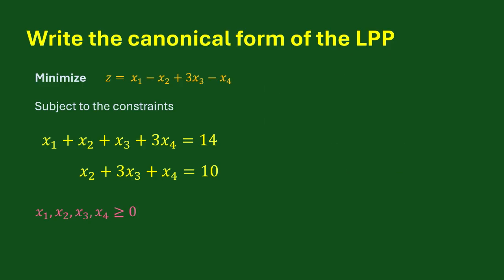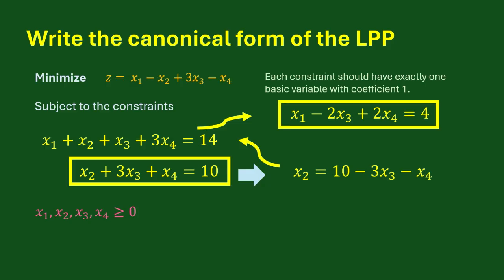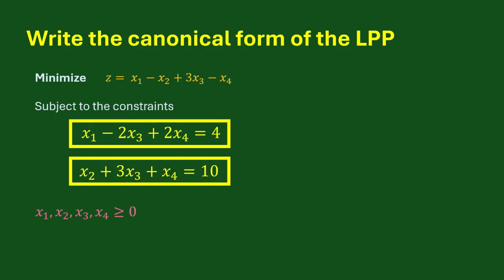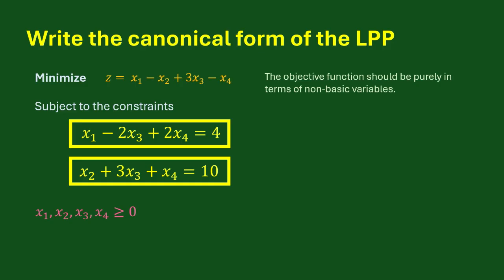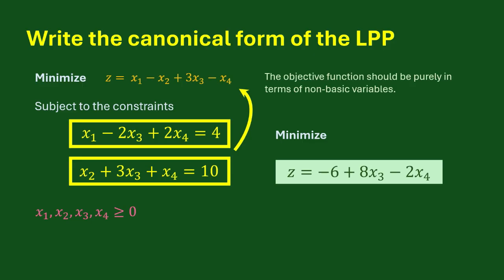Another requirement for the canonical form is that each constraint should have exactly one basic variable with coefficient 1. From the second constraint, we take the value of x2 and plug it into the first constraint to yield an updated equation. Now we can see that each constraint has exactly one basic variable with coefficient 1. The last requirement is that the objective function should be purely in terms of non-basic variables. For that, we take the values of x1 and x2 from the two constraints and plug them into the objective function. This yields an objective function written purely in terms of non-basic variables x3 and x4. Now our given problem is in its canonical form.